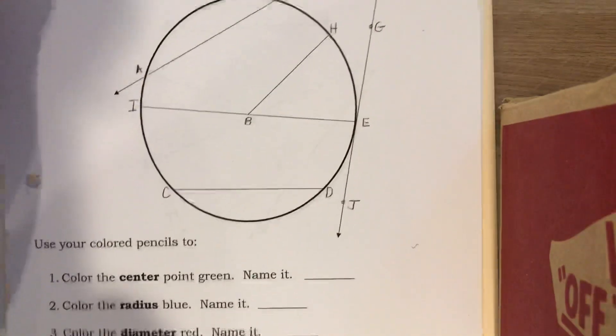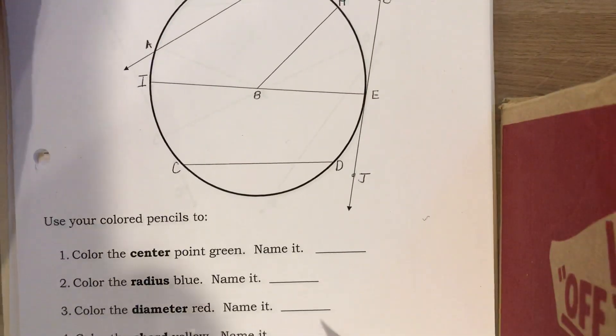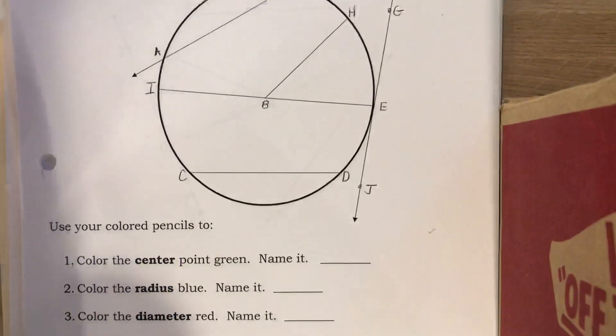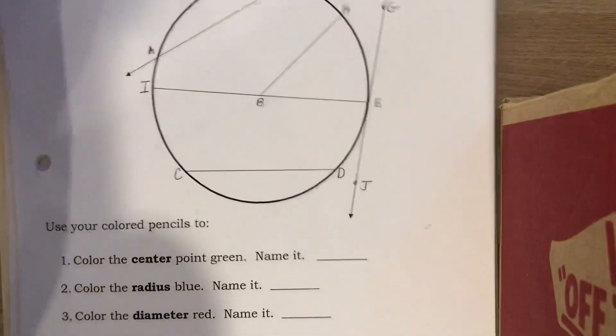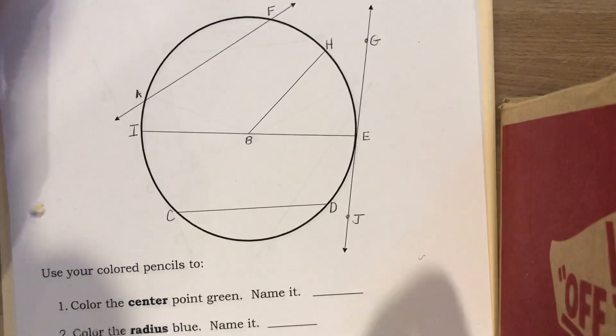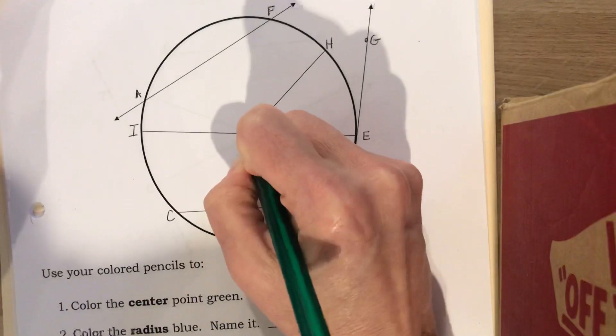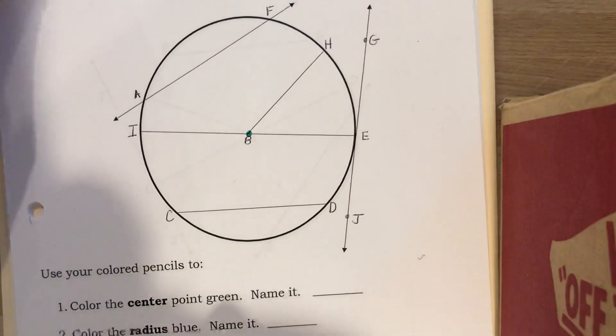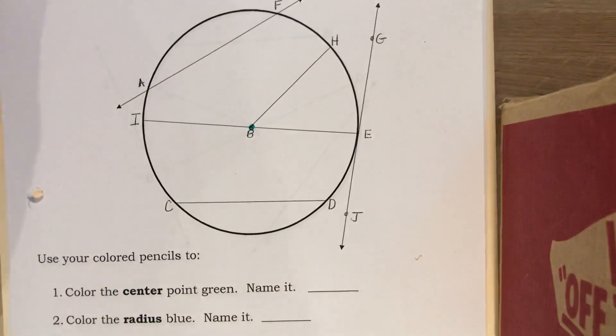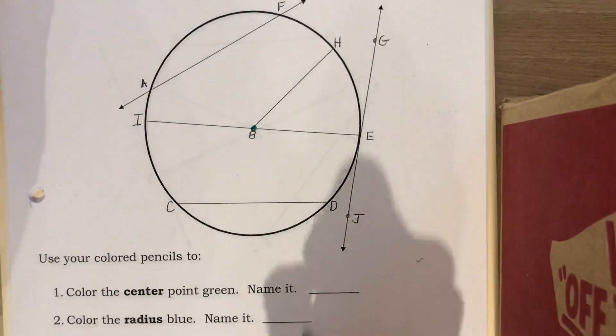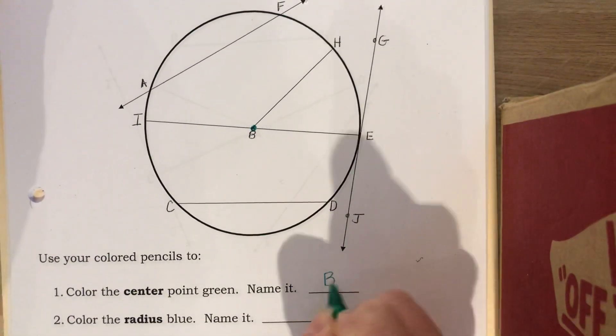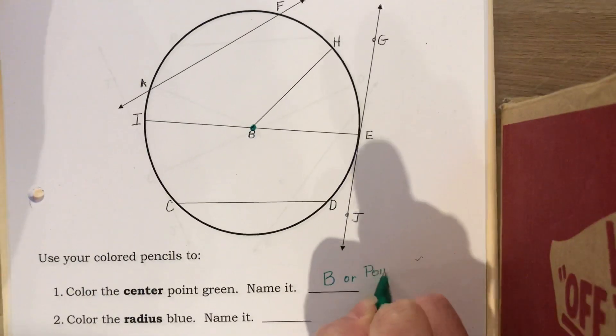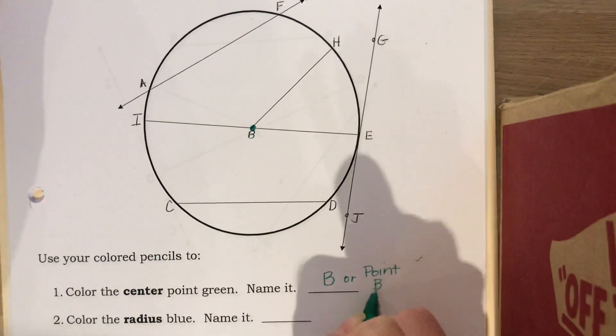For naming parts of a circle, if we look down at the bottom here, the first one says color the center point green. In our picture, the center point is B and we have to name it. The way we name our center point is just by using one letter, B, or point B. Either is acceptable.